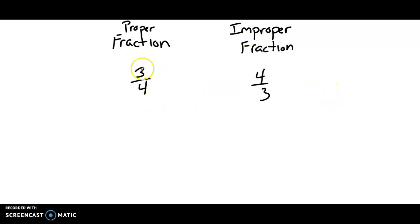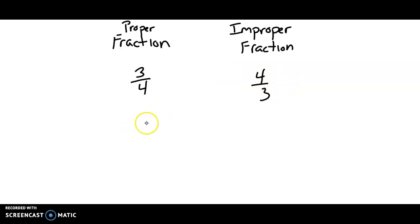Look at this proper fraction — it is bigger on bottom, the smaller number is on top. The improper fraction has the larger number on top and the smaller number on bottom. How do you know which one to change into a mixed number? I like to use a triangle. A triangle always helps me decide which one stays as a proper fraction and which one changes to a mixed number.